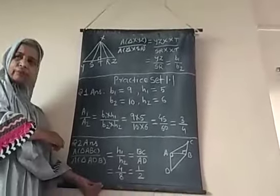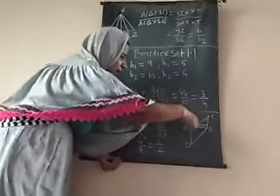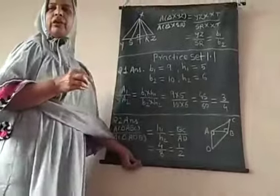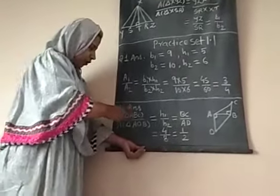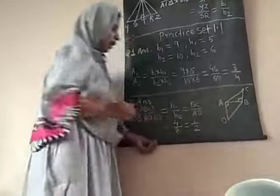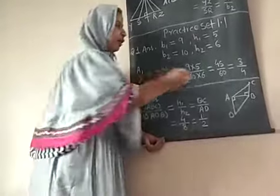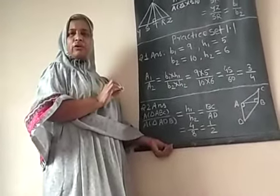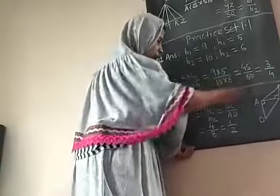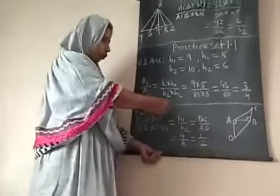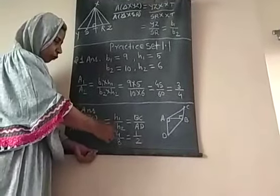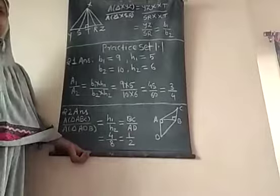In the second question, triangle ABC and triangle ADB share common side AB. Therefore, area of triangle ABC upon area of triangle ADB — since AB is the common base, we use the equal base formula. So the ratio equals only the height ratios: H1 upon H2, which is BC upon AD. The given values are 4 upon 8, and the reduced form is 1 upon 2.